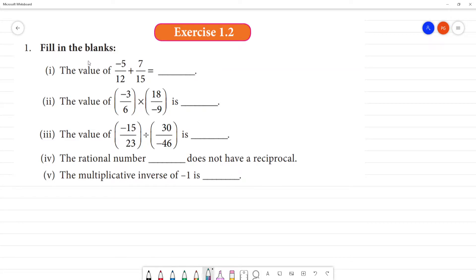Exercise 1.2, first one, filling the blanks. Let's look at the first one. How do we solve the value of minus 5 by 12 plus 7 by 15? What do we do?